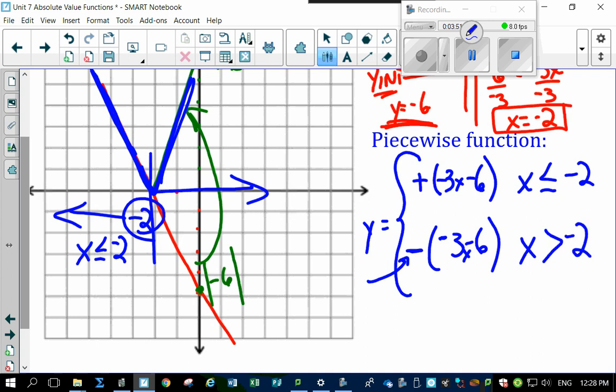Look at this. Look how easy this becomes. Now, clean this up a little bit. Distribute that negative in here. And when you distribute that negative in here, it turns this into, guess what? Right? Turns it into 3x plus 6. There's your piecewise function.